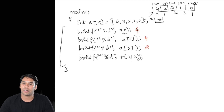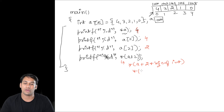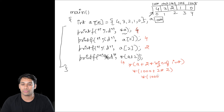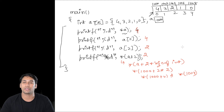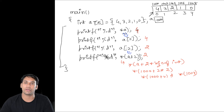Now this statement — *(a + 2) — is equivalent to *(a + 2 × sizeof(int)), which is equivalent to *(1000 + 2 × 2), which is *(1004), and that equals 2. These statements are equivalent and are printing the value at the same location.